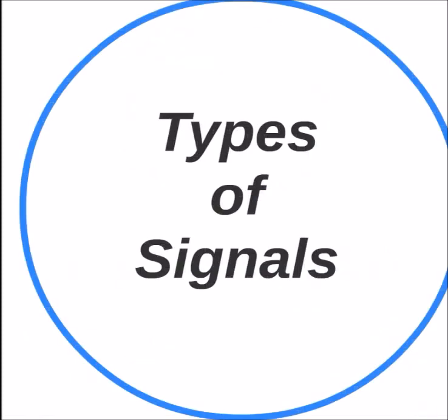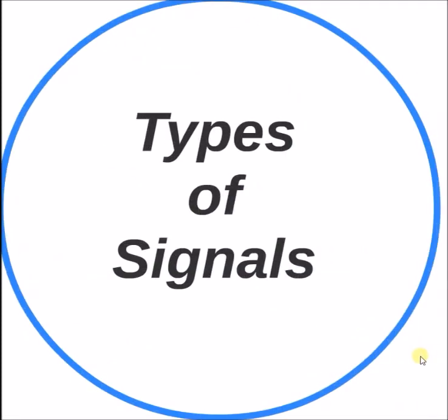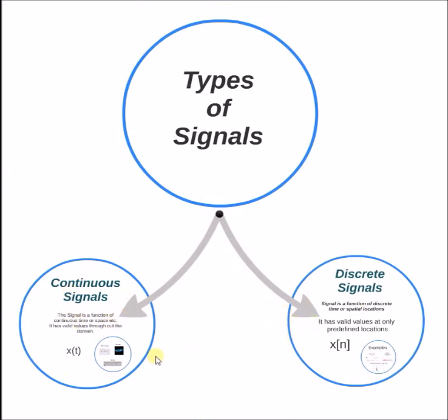Hello, welcome. In this short video, let us look at different types of signals. There are two types of signals: continuous signals and discrete signals.